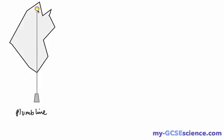This string with a weight attached to it, if it's allowed to be freely suspended and allowed to move while it's hanging, will point directly towards the centre of the earth. It will point directly downwards.